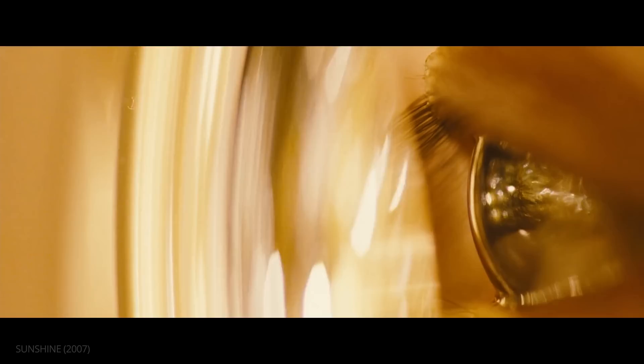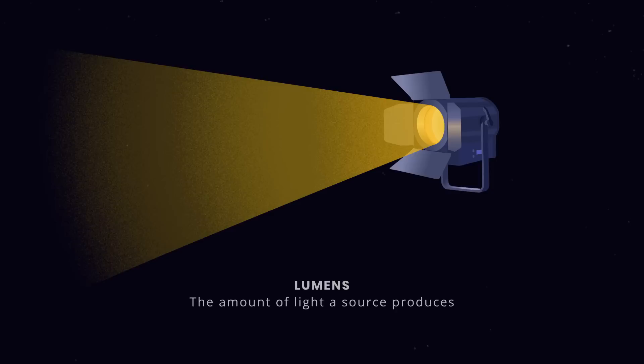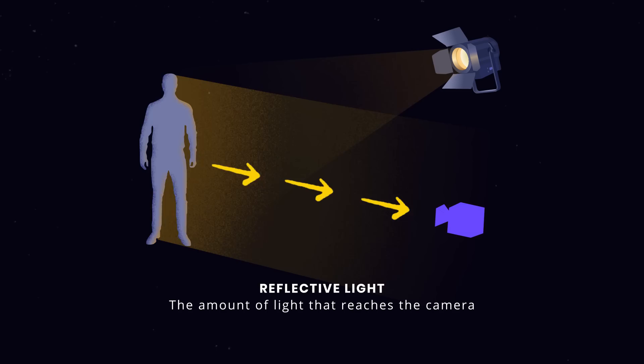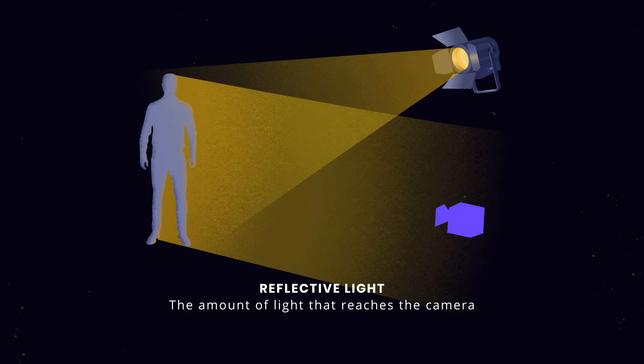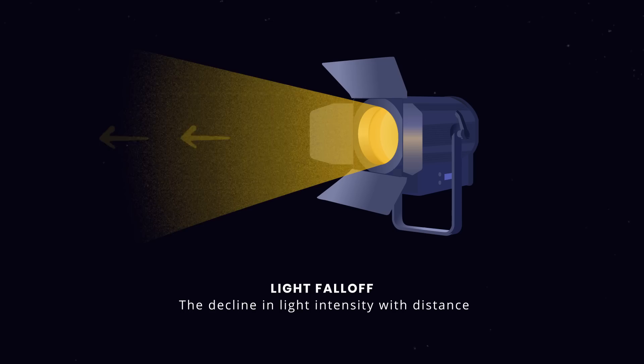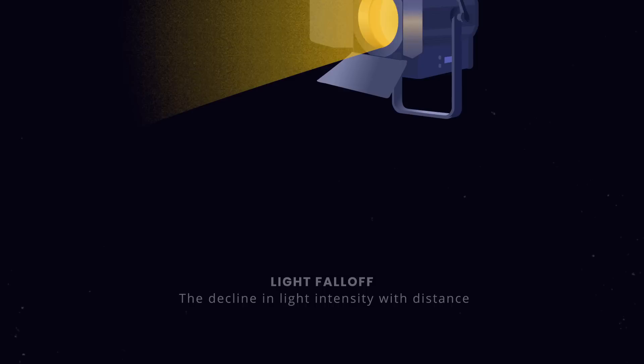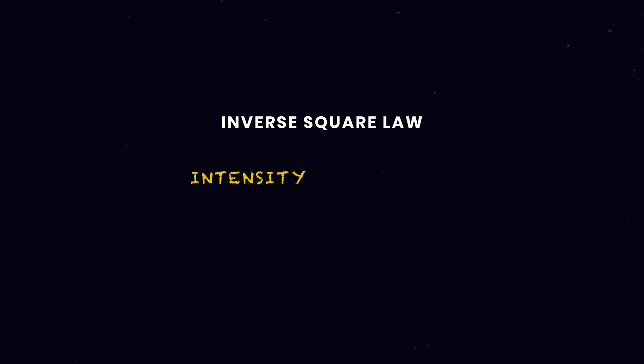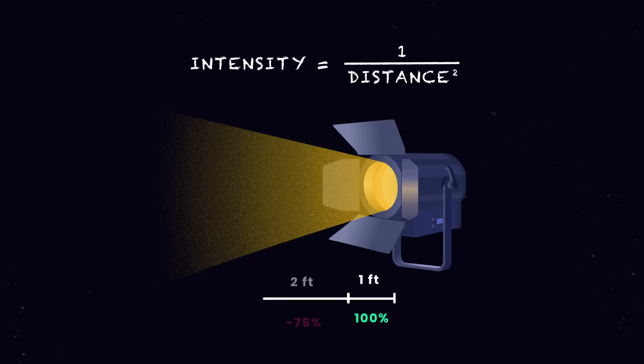To work with light, cinematographers also need to understand its properties. Lumens is a measurement of how much light a source produces. Lux, or foot candles, measures how much of that light hits the subject — otherwise known as incidental light. Reflective light is the amount of light that reaches the camera. As soon as light leaves the source, it begins to lose intensity. This is called light fall-off, and we can predict and account for this loss using the inverse square law. The intensity of light is equal to 1 over the distance squared — meaning every time you double the distance from the source, the light is reduced by 75%.